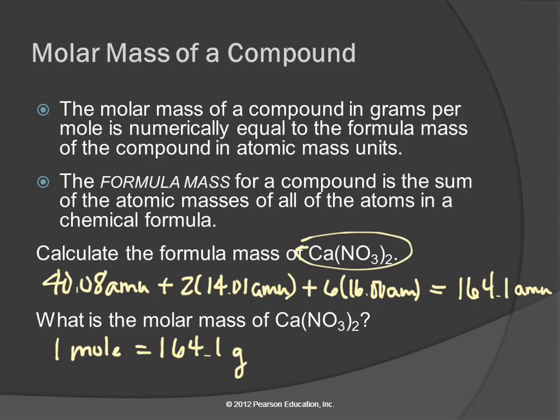So atomic mass unit, teeny tiny unit, appropriate for measuring the mass of one atom. Gram is way too big for that. So what we did is we invented a dozen that was large enough that gram becomes an appropriate unit for measuring the mass of that funky dozen.